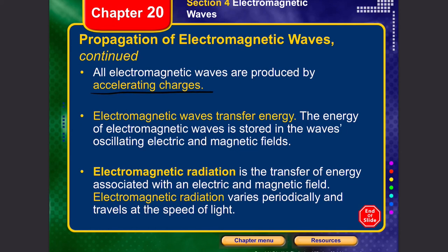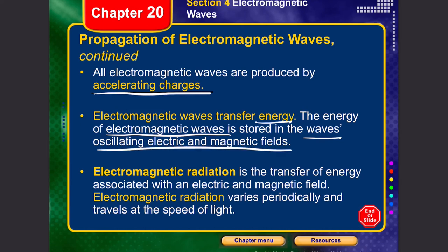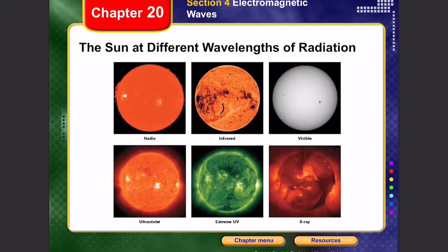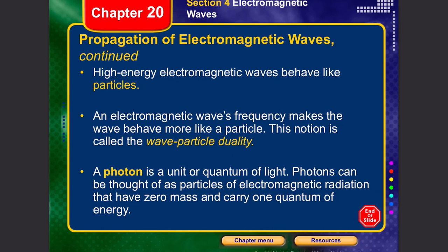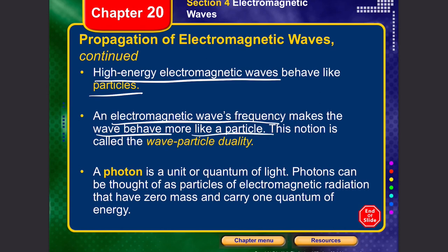All electromagnetic waves are produced by accelerating charges. The energy of electromagnetic waves is stored in the wave's oscillating electric and magnetic fields — this is called electromagnetic radiation, which is the transfer of energy associated with electric and magnetic fields. It varies periodically and travels at the speed of light. High-energy electromagnetic waves can behave as particles — this is the concept of wave-particle duality.